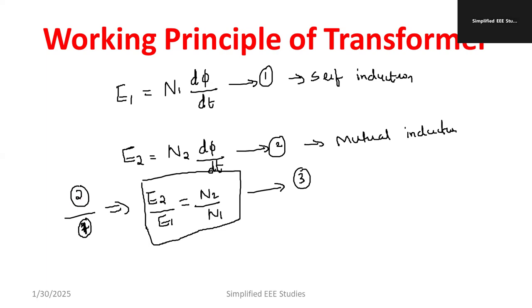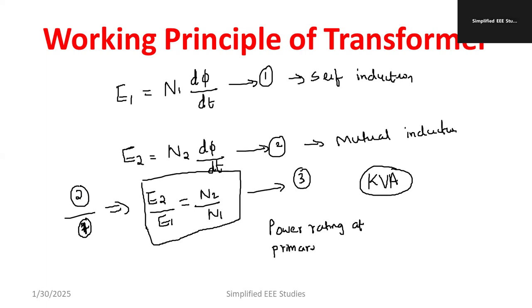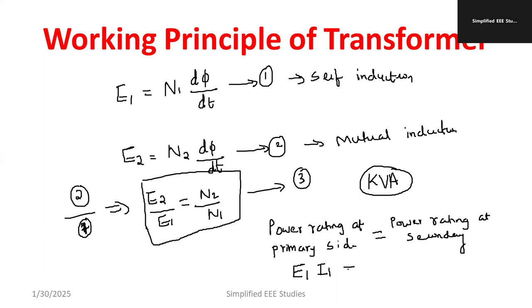When talking about the transformer, power is expressed in kVA — kilovolt ampere. The power at the primary and the power at the secondary will be the same. Power rating at primary equals power rating at secondary, so E1·I1 = E2·I2. Therefore, mathematically we can write E2/E1 = I1/I2, which is equation number 4.